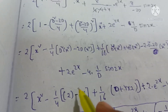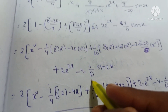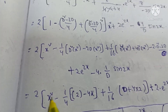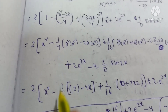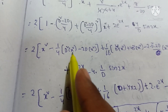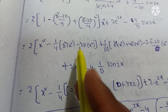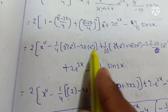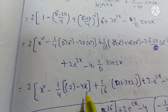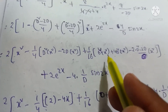Therefore, continuing the computation: plus terms involve minus 4 into 1 by 2 into sin 2x. For x squared: 2 into x squared minus 1 by 2 into d squared of x squared, where d squared of x squared equals 2, and minus 2 into d of x squared equals 2x into 4x plus 1 by 16 into d power 4 of x squared.